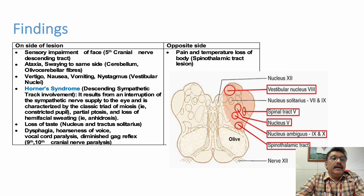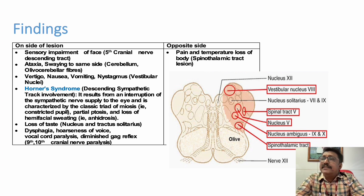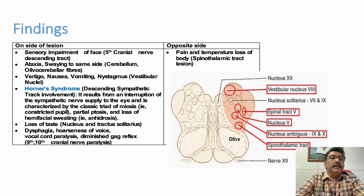The patient can have ataxia, swaying towards the same side of the lesion, due to involvement of olivocerebellar fibers. The cerebellum itself is not always involved — most of the time it is the cerebellar fibers that are affected. Sometimes cerebellar involvement can also occur.